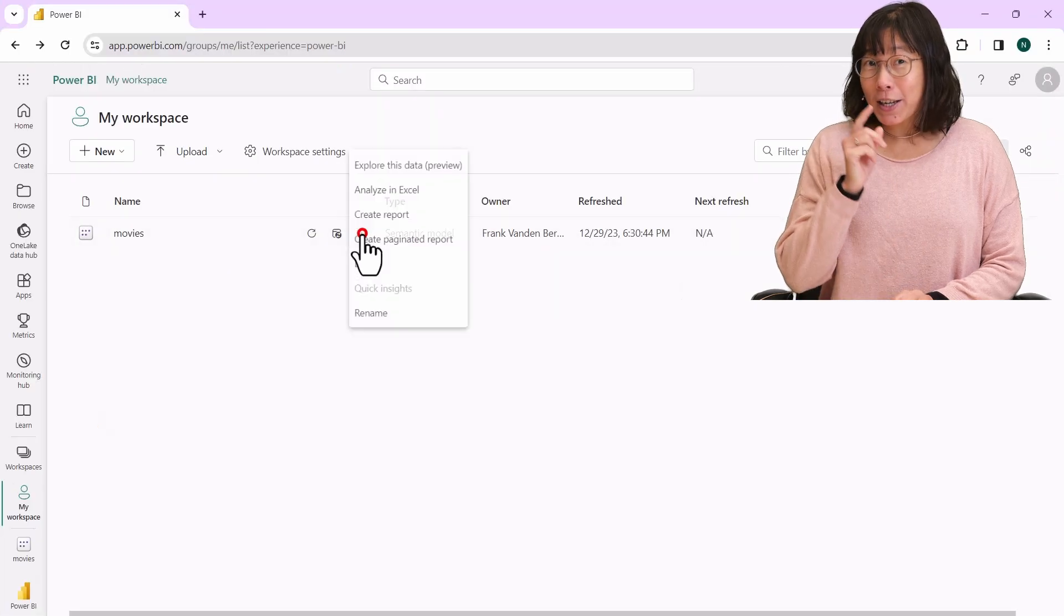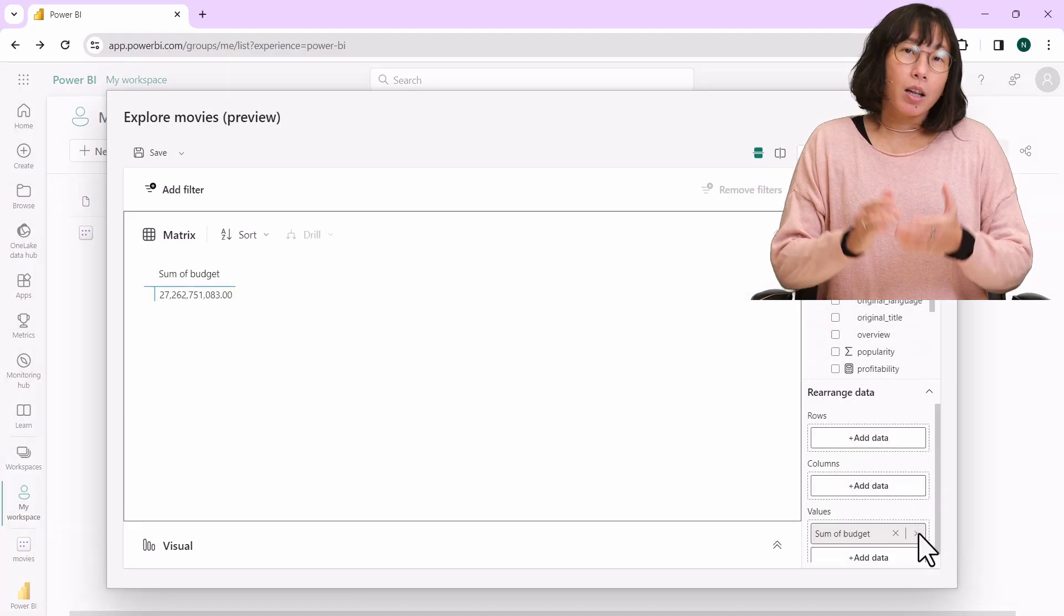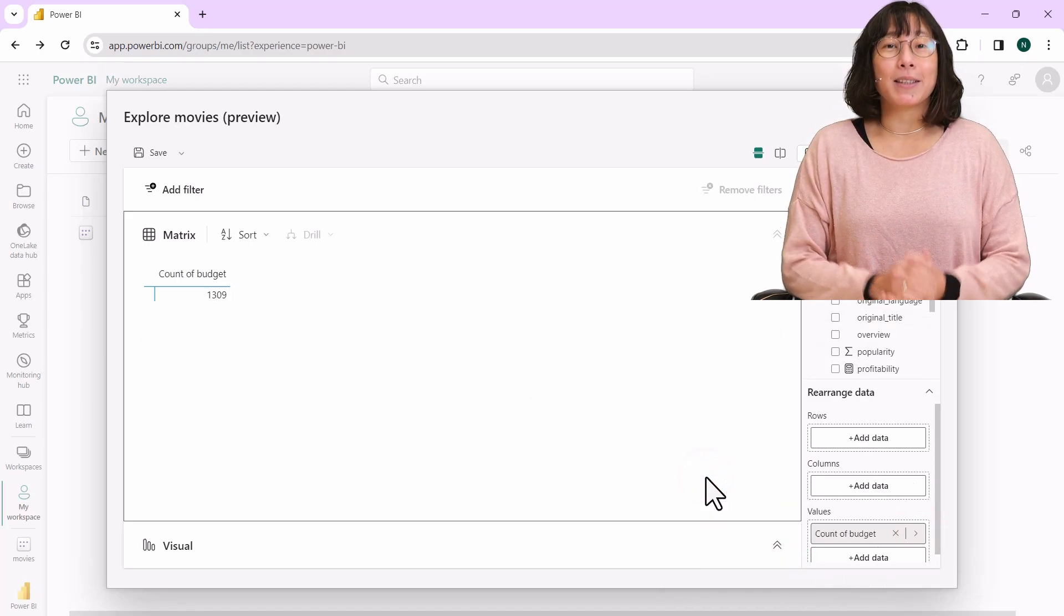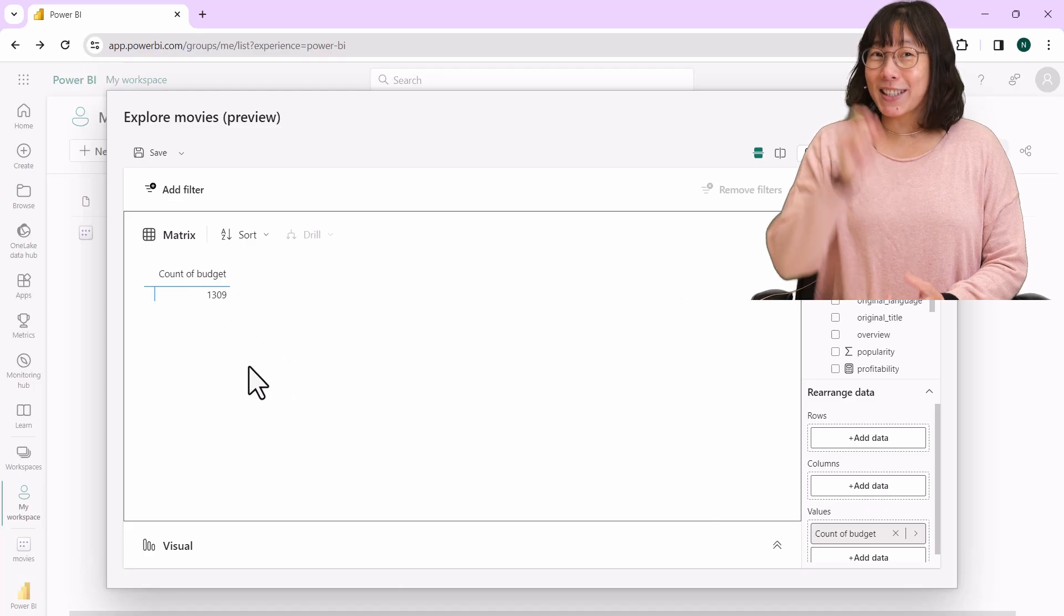Let's verify if everything worked correctly in Power BI in the cloud. Let's explore the data. Let's check the row count. It matches the original 1,309 rows. Yes!